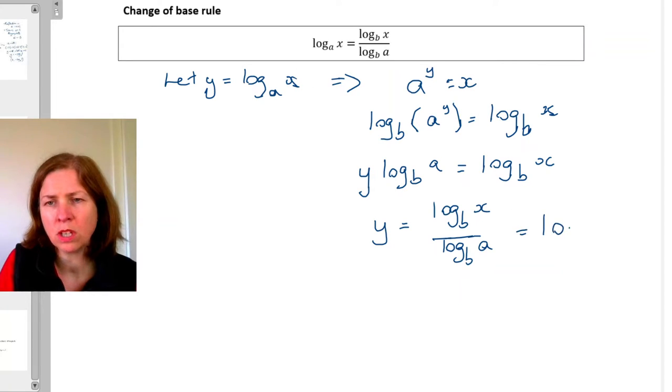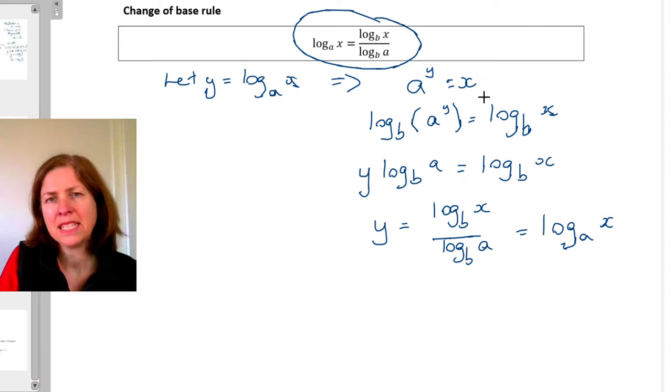So this all equals log base a of x. And that's what gives me this rule up here. Log base a of x is equal to log base b of x over log base b of a.